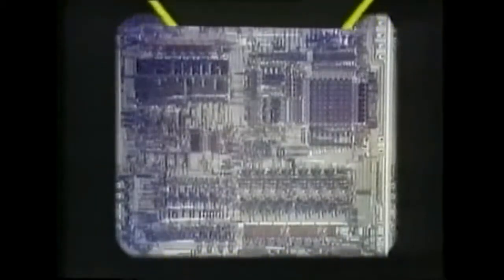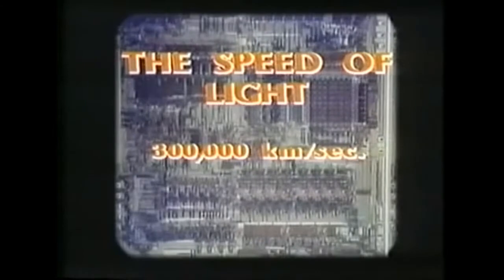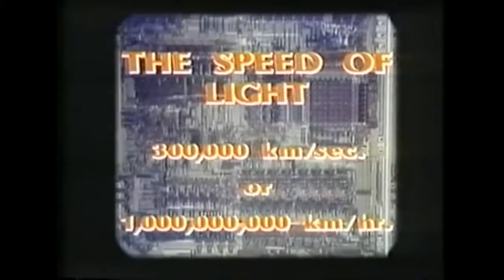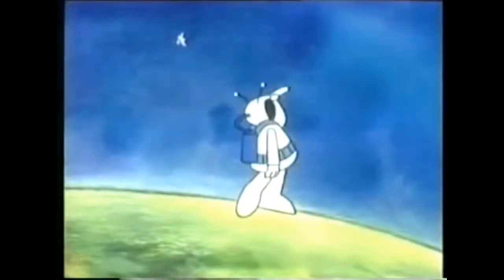Electric current travels through computer circuits at very close to the speed of light — 300,000 kilometers per second, which is about 1 billion kilometers per hour. If an astronaut were able to travel as fast as that, he would be able to go to the moon and back in just under four seconds.